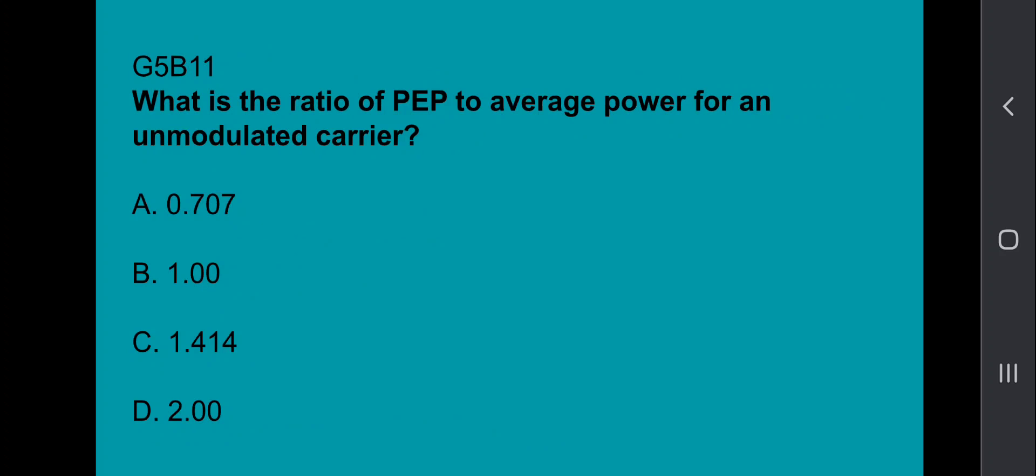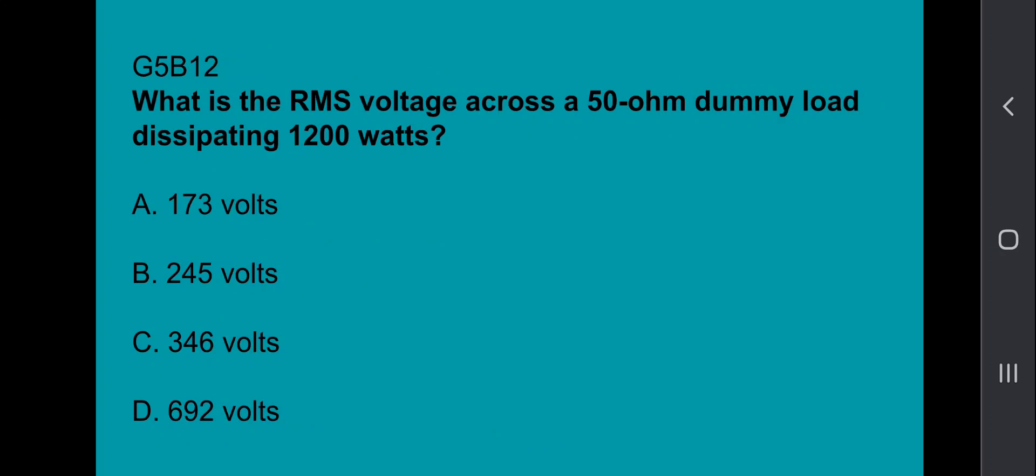G5B11, what is the ratio of PEP to average power for an unmodulated carrier? That's 1.00. G5B12, what is the RMS voltage across a 50 ohm dummy load dissipating 1,200 watts? 245 volts.